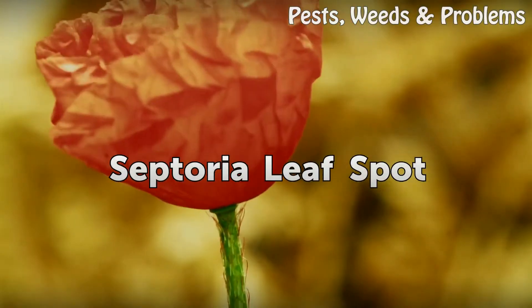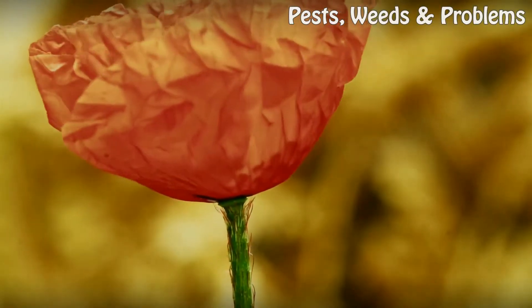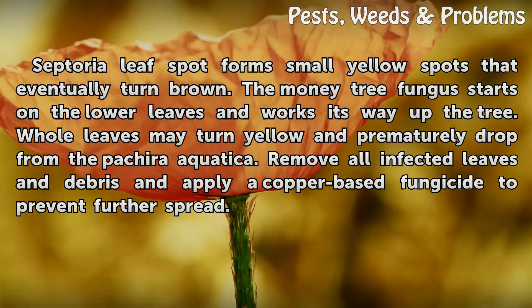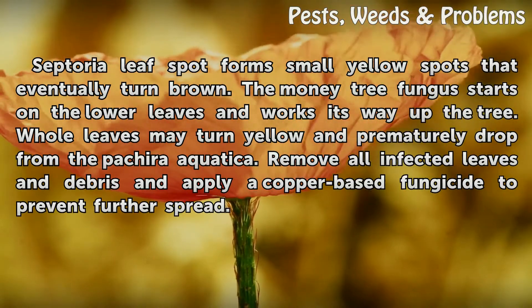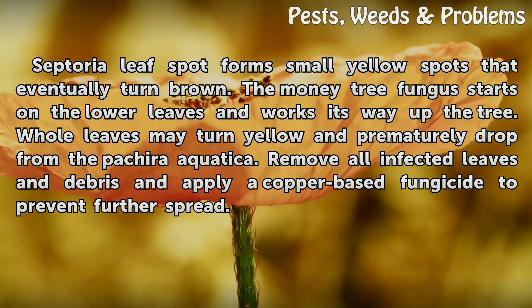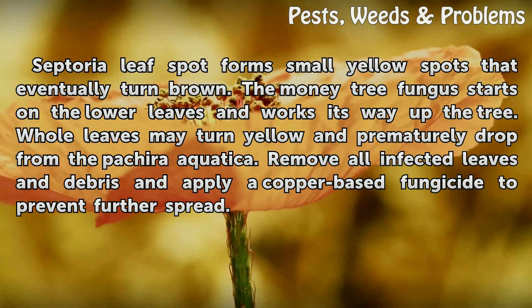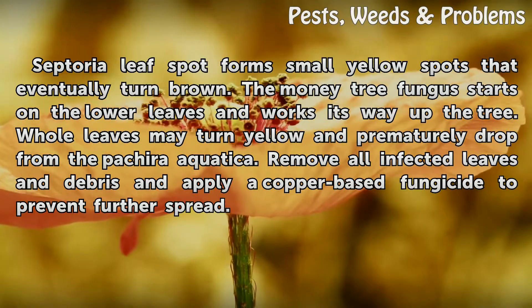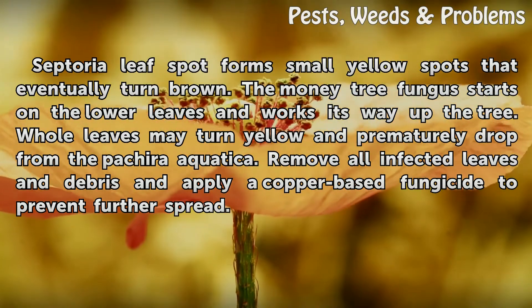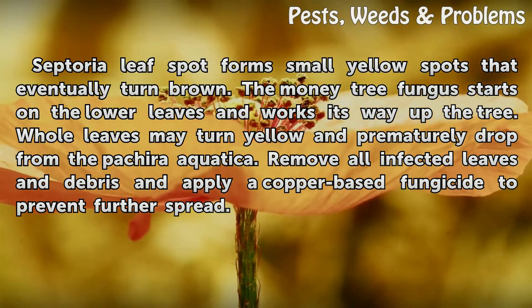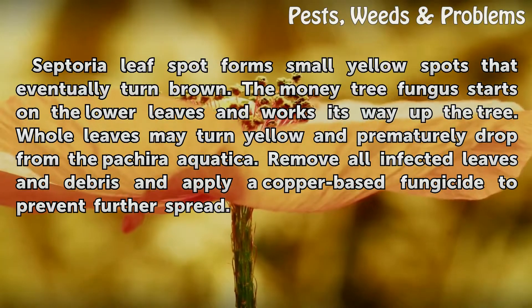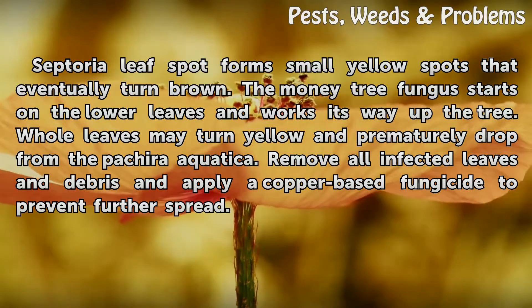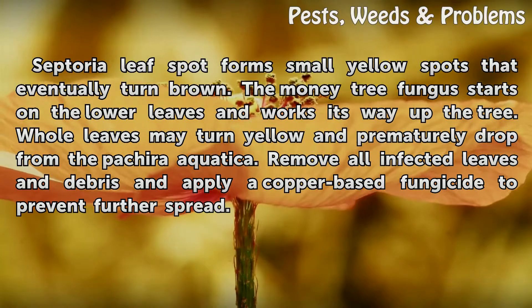Septoria leaf spot forms small yellow spots that eventually turn brown. The money tree fungus starts on the lower leaves and works its way up the tree. Whole leaves may turn yellow and prematurely drop from the Pachira aquatica. Remove all infected leaves and debris and apply a copper-based fungicide to prevent further spread.